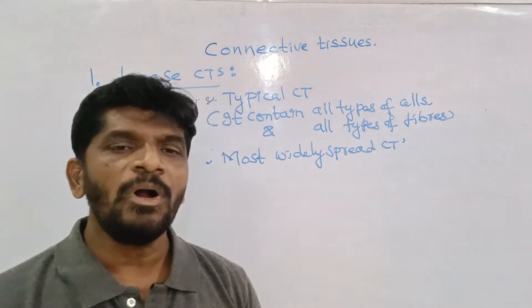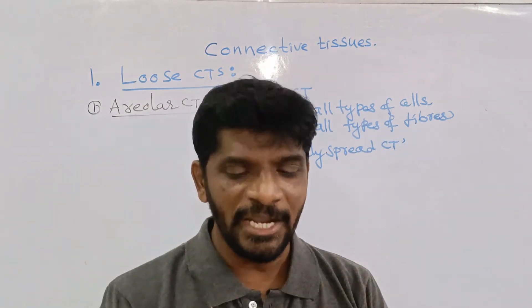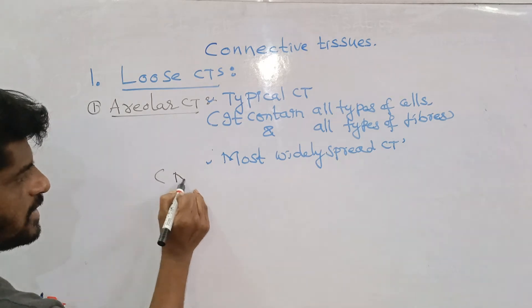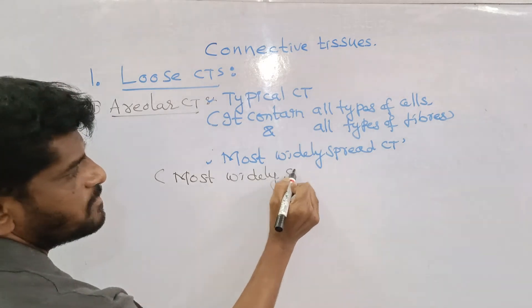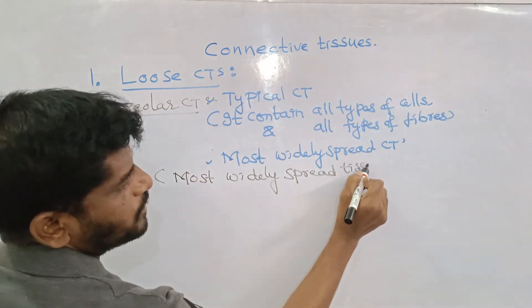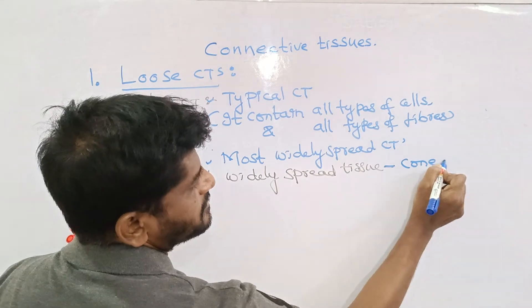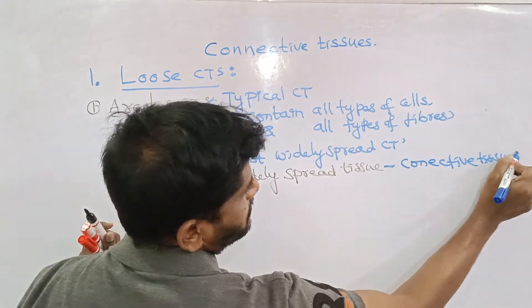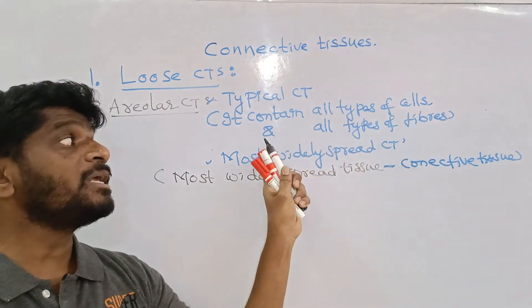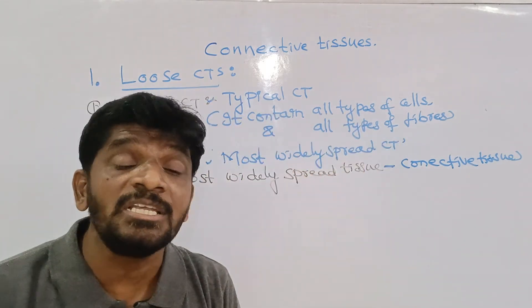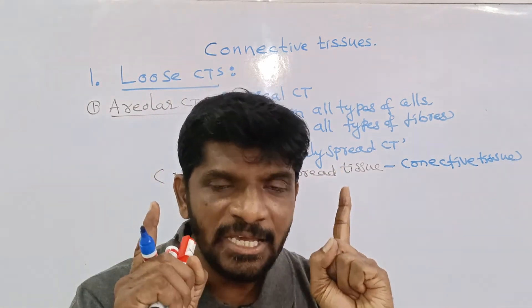The most widely spread tissue in the body is connective tissue. Among the connective tissues, the most widely spread is the areolar connective tissue, as it contains all types of fibers. It is a typical connective tissue.